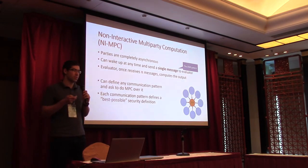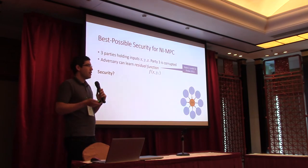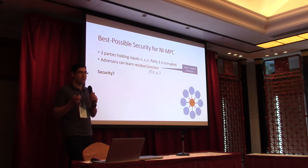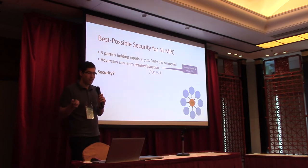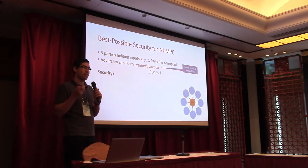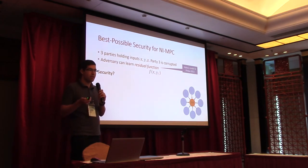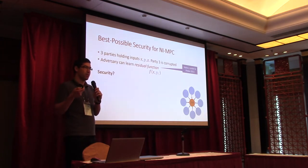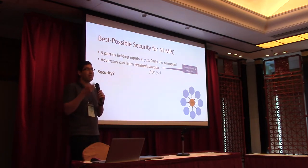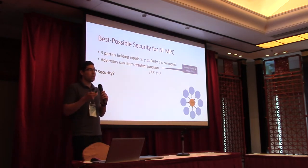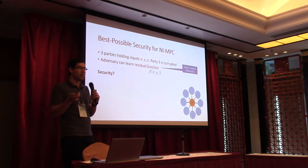We call this the best possible notion of security. Consider a scenario in which you have three parties holding inputs x, y, and z wishing to compute f(x, y, z). If party three is corrupted and colluding with the evaluator, the evaluator can compute any value of the form f(x, y, z') for any z' it wants. So it's a very strong attack, and therefore we cannot hope to get a very strong notion of security like in the classical setting.